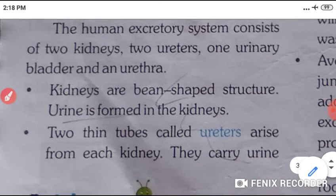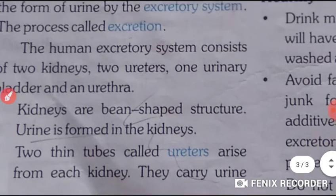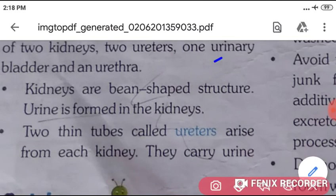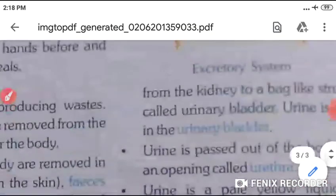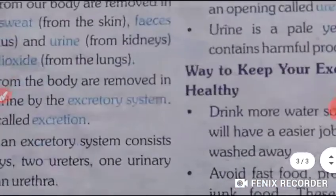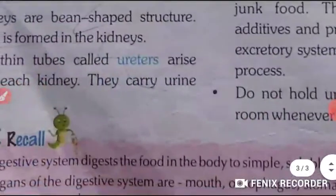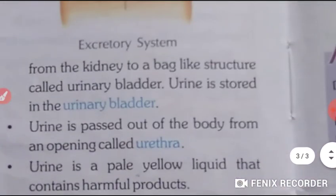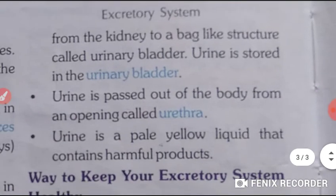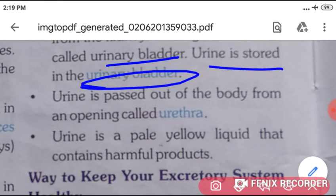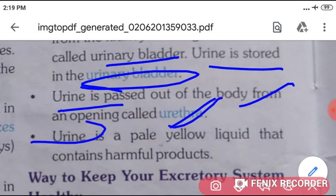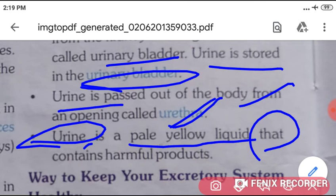Ureters arise from each kidney and carry urine. Next is one urinary bladder — the ureters carry urine from the kidney to this bag-like structure called the urinary bladder, where urine is stored. One urethra is also there, through which urine is passed out of the body. Urine is a pale yellow liquid that is harmful for our body and contains harmful and toxic products.